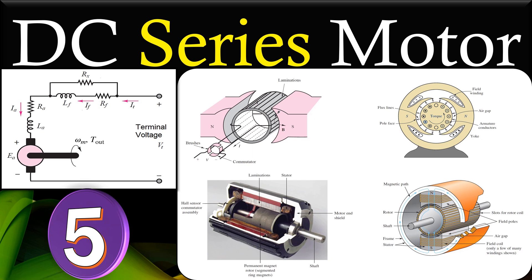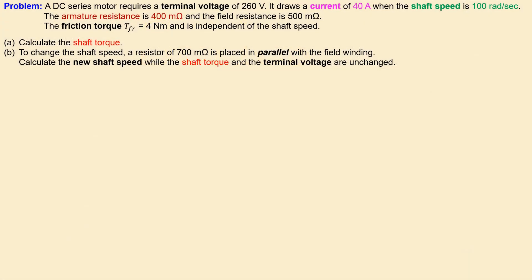Greetings and welcome to a new video about a DC series motor example. This is example number five. In this example I will discuss speed adjustment using a parallel resistor across the field winding of a DC series motor. Let's look at our example.